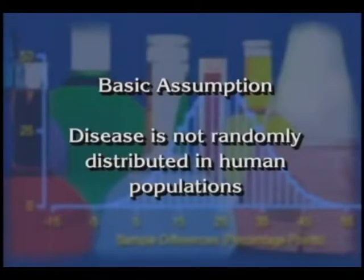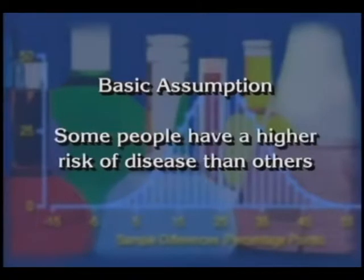Underlying all this is the basic assumption that disease is not randomly distributed in human populations. Because some people have higher risks of disease than others, what we want to do is account for why the risk is higher in some people than another, in order to identify factors that can be modified in order to prevent disease.